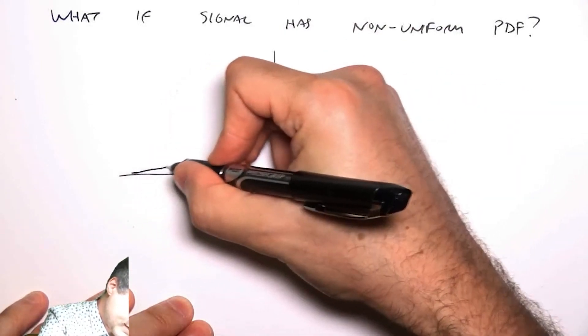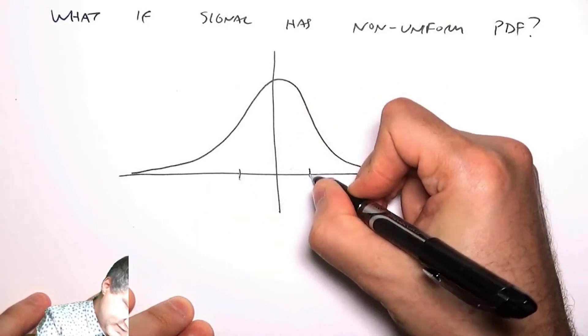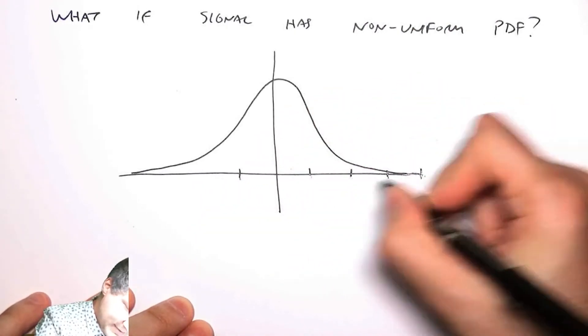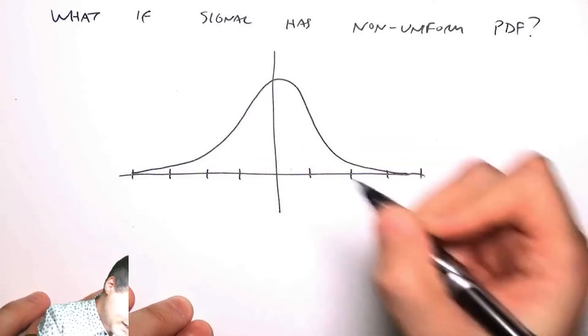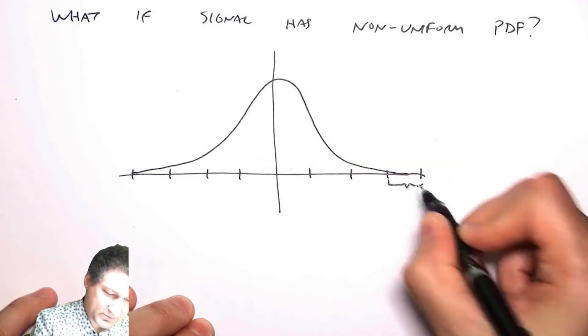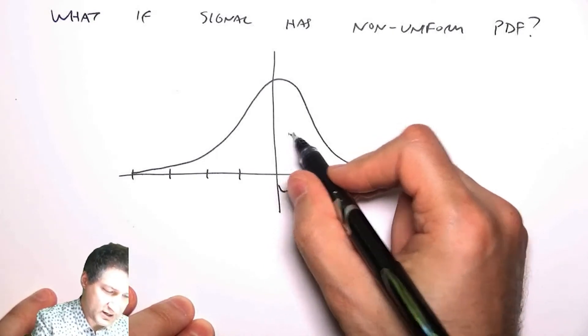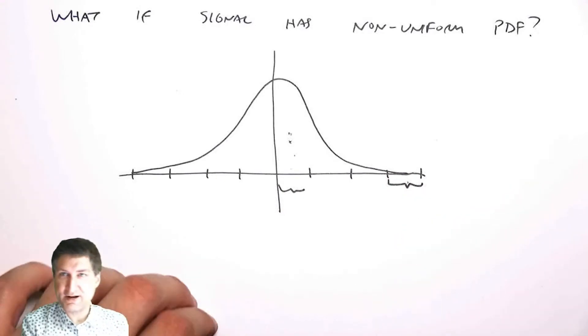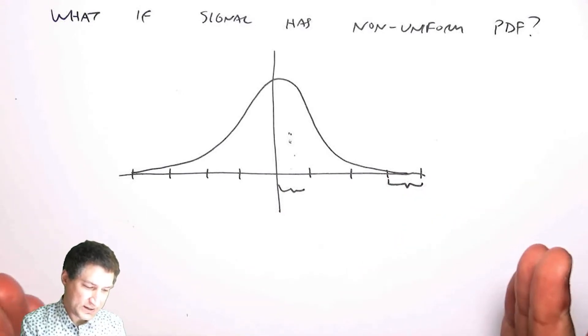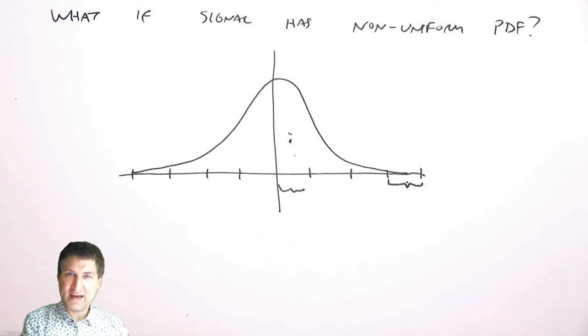So suppose I've got a PDF that looks something more Gaussian. If I were to chop this up into the same even intervals on the X-axis, that wouldn't make any sense, because that would be like saying I'd be allocating the same number of bits to this bin as I would be to this bin, even though this bin over here is very very probable and this one hardly ever happens. So kind of what I want to do is I want to spread out the bins in such a way that each of these bins has an equal amount of probability, and that's basically called a compander.